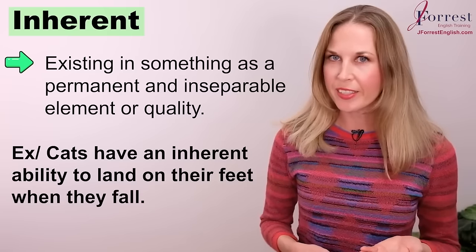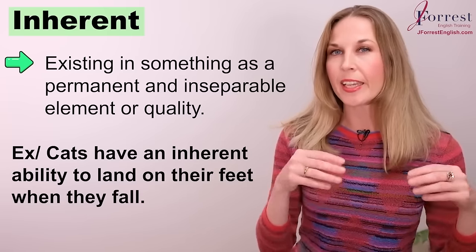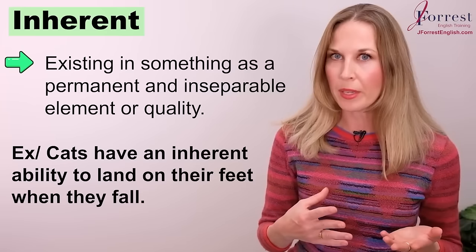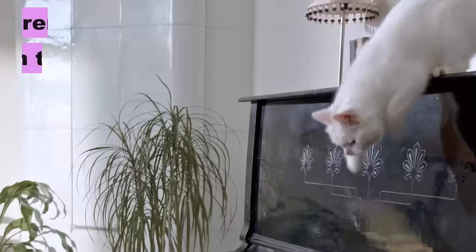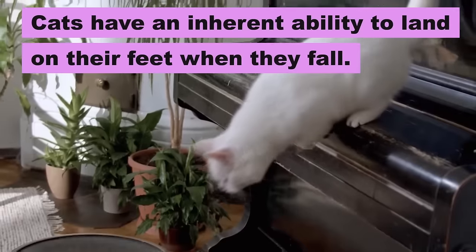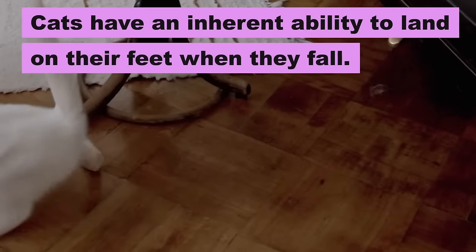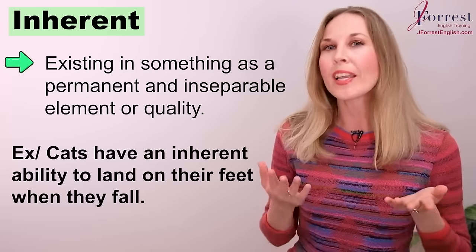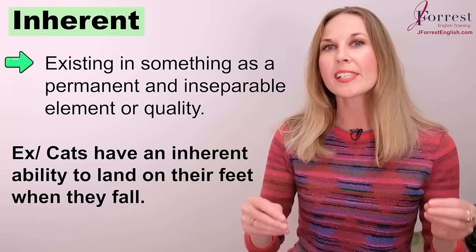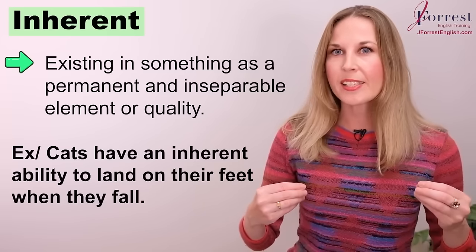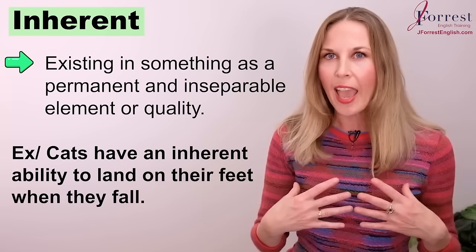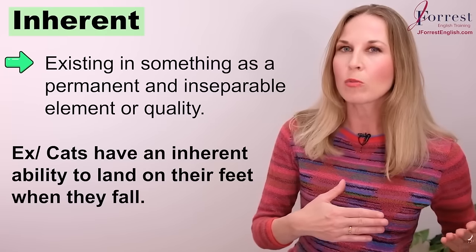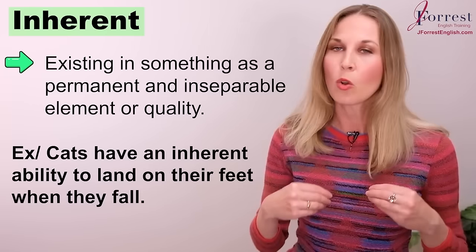Inherent. This means existing in something as a permanent or inseparable quality or element. For example: cats have an inherent ability to land on their feet when they fall. Have you heard that? When a cat falls, it always lands on its feet? Well, this is an inherent quality — it's permanent within the cat, it's not separable from the cat. The cat didn't learn how to do this. It's just an inherent quality.